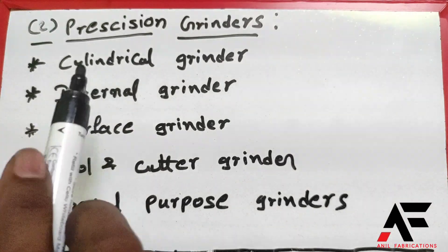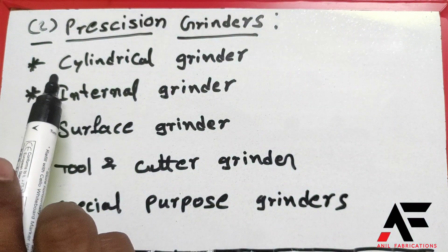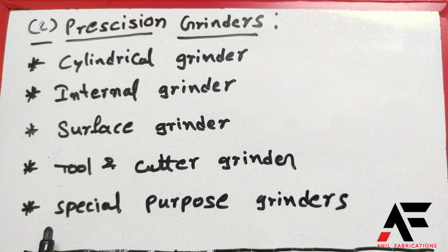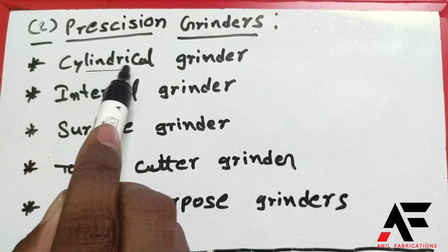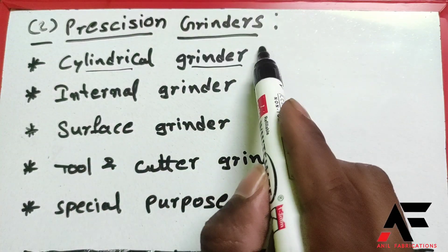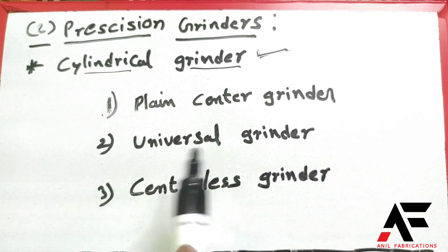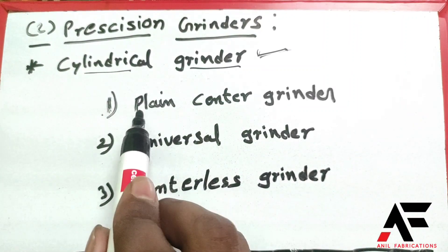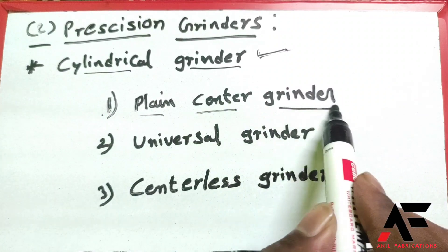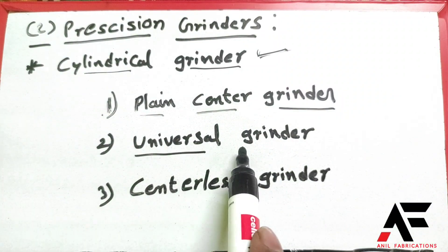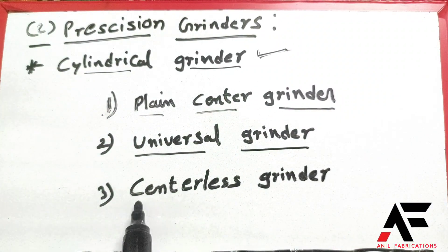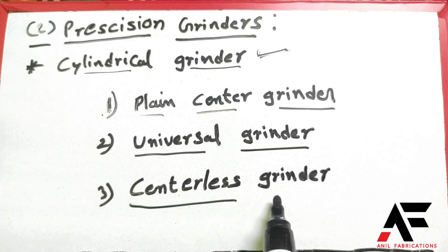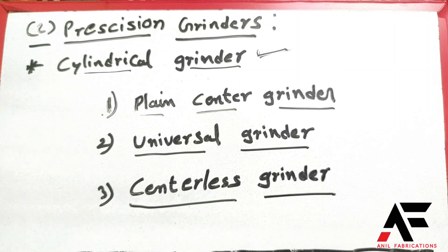Precision grinders have 5 types. Cylindrical grinders include 3 sub-types: 1. Plain Center Grinder, 2. Universal Grinders, 3. Centerless Grinders.